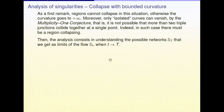The analysis is understanding what you get when you send your time T to big T. What you get is some kind of limit network, in order to possibly reapply one of the short-time existence theorems that we saw at the very first lecture — in particular, the very general theorem of Ilmanen, Neves, and Schulze, in order to restart your flow.